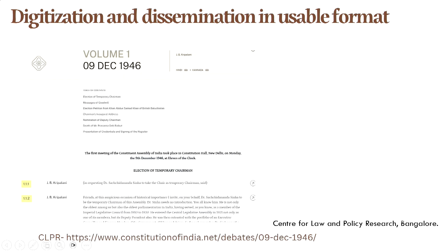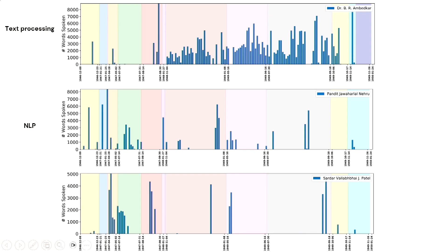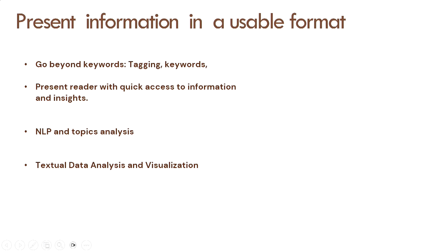CLPR took up this initiative and did the job, and we also cleaned it up. If libraries can do some of these things, that makes the job of researchers much easier. We need to go beyond keywords and make information easily accessible. NLP and topic analysis is currently the purview of data scientists, but some of these elements can also be brought into library science — using natural language processing techniques for cataloging, subject classification, and topic discovery. That will help in textual data analysis and visualization.